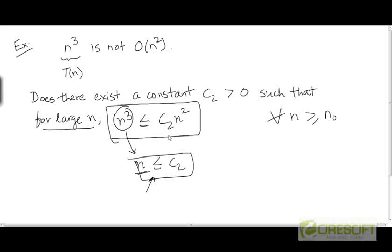n³ has a higher rate of growth. And so no matter what constant c₂ you choose, sooner or later the curve for n³ is going to overtake the curve for c₂n².